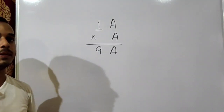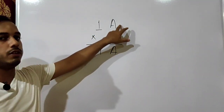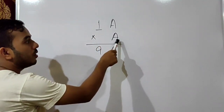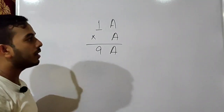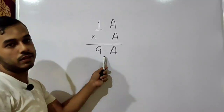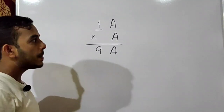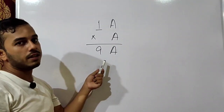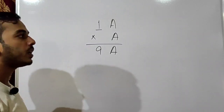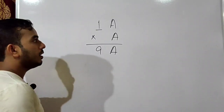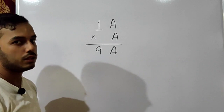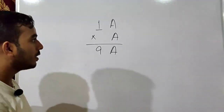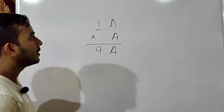We will find the value by hit and trial method. If A is 0, then 10 into 0 is 0, but we need result 90, so 0 is not possible. If A is 1, then 11 into 1 is 11, but we need 91, so not possible. If A is 2, then 12 into 2 is 24, but in the tens place we need 9 and we got 2, so not possible. If A is 3, then 13 into 3 is 39 — not possible. If A is 4, then 14 into 4 is 64 — not possible. If A is 5, then 15 into 5 is 75 — not possible.